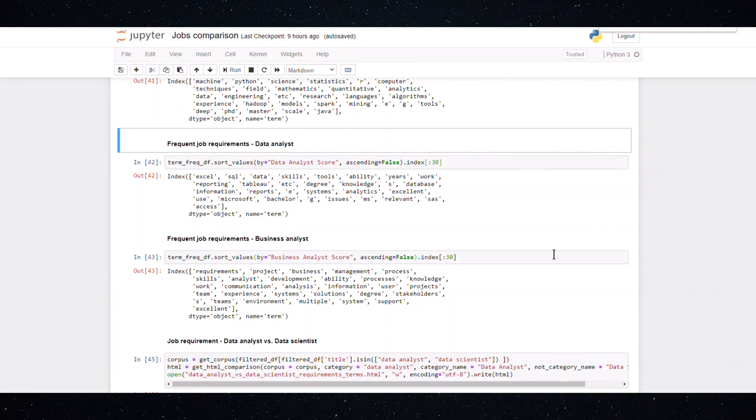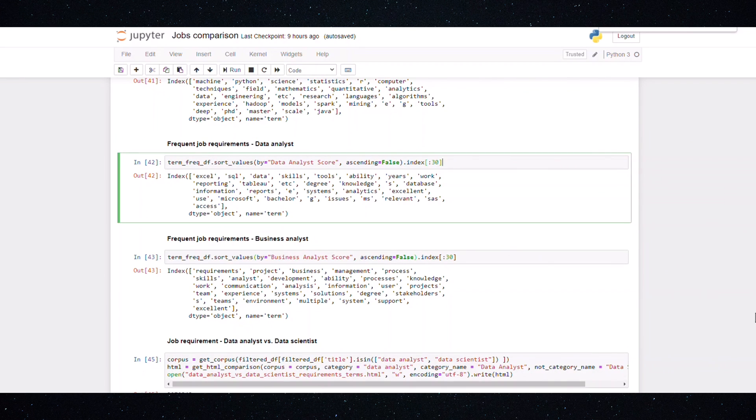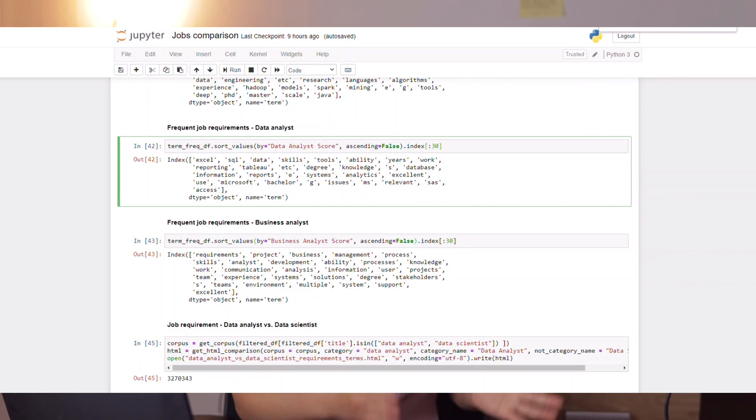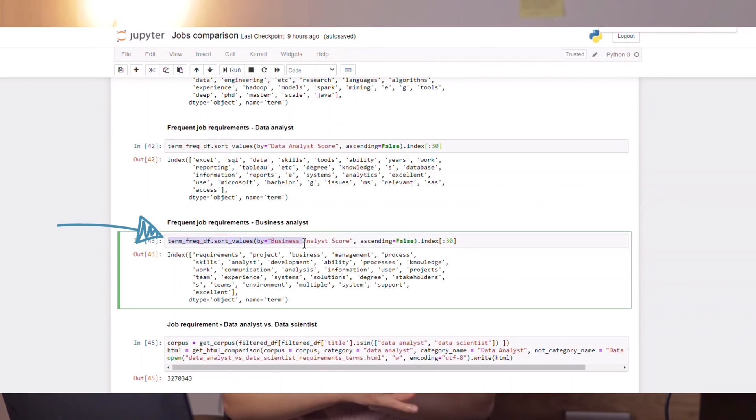And how about the job requirements of a data analyst? We see things like Excel, SQL, Tableau, reporting, also SAS, Microsoft. So you can see that in the job requirements of a data analyst we see more things that are related to SQL, data visualization like Tableau, and also Microsoft Office tools.